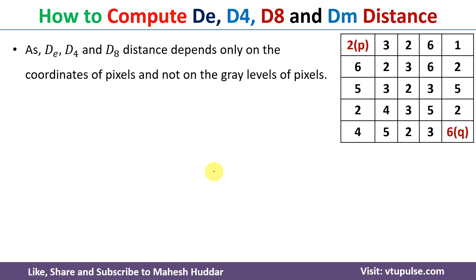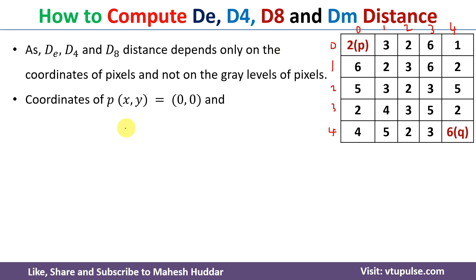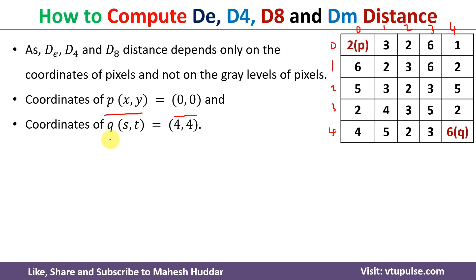To calculate DE, D4, and DM, we need to know the coordinates of these two pixels p and q. There is no need to know the gray level values to calculate these three distance measures. To calculate the coordinates, I will write the values 0, 1, 2, 3, 4 for horizontal rows and 0, 1, 2, 3, 4 for vertical columns. The coordinates of pixel p are (0,0), meaning x=0 and y=0. The coordinates of q are (4,4), meaning s=4 and t=4.